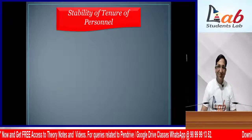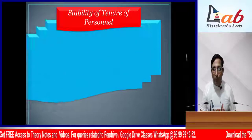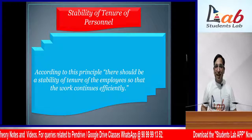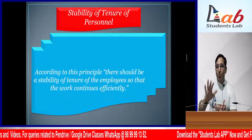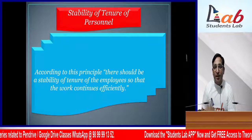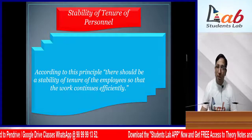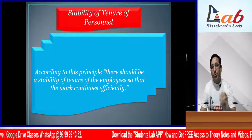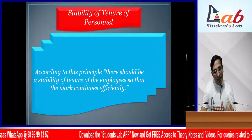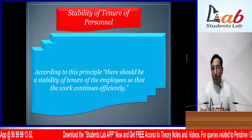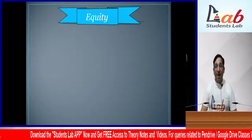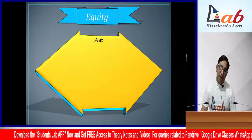Next comes Stability of Tenure of Personnel. Anyone needs time to settle down. If any employee comes, give them time to settle. This is called Stability of Tenure - tenure means time period. Only then will they be able to work well. It takes time to become proficient in anything, so give your employees time. This is called Stability of Tenure of Personnel.